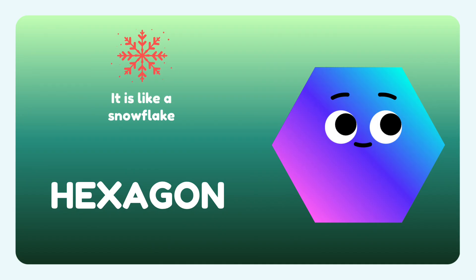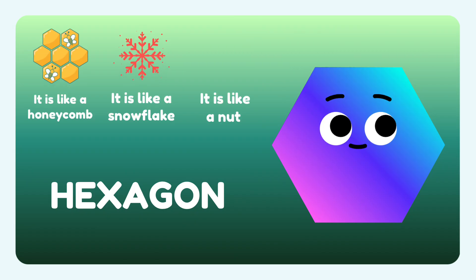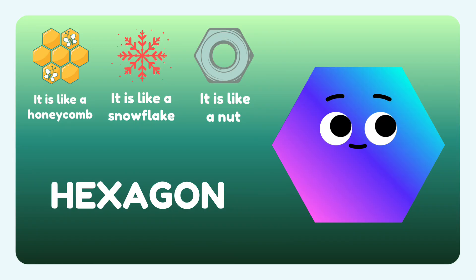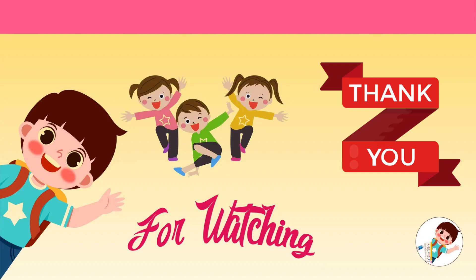Like a snowflake and like a nut. All these objects can be seen in the form of a hexagon. Yay, we have completed! Now let us recap: first is triangle, second is square, third is circle, fourth is rectangle, fifth is pentagon, and last but not least, hexagon. Thank you for watching our video, bye bye kids!